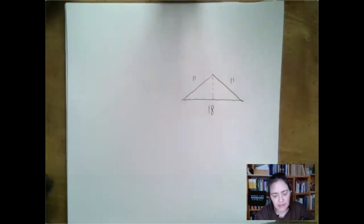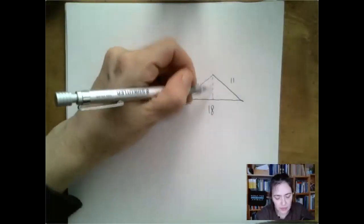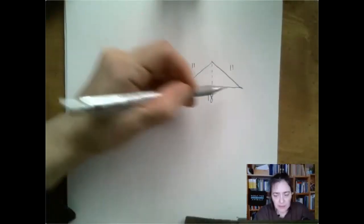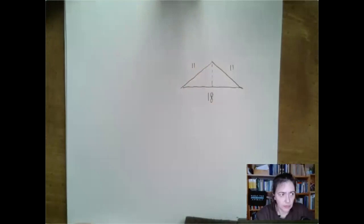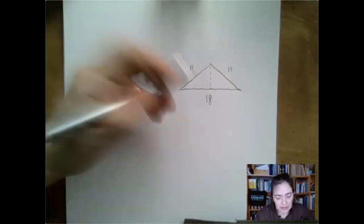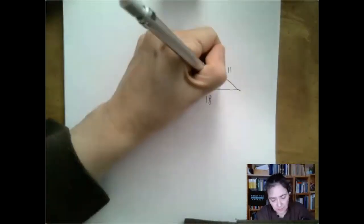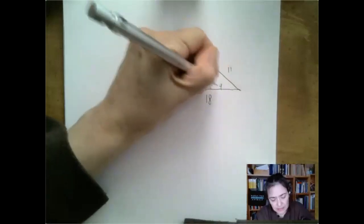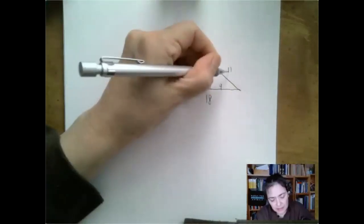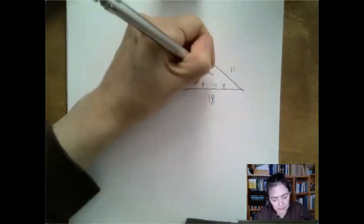This is where it comes in handy that this triangle is isosceles, because usually the height splits the opposite side into two parts and we don't know how — but in this case, it halves it. So we know that this side is 9, this is 11, and we're talking about the right triangle formed.